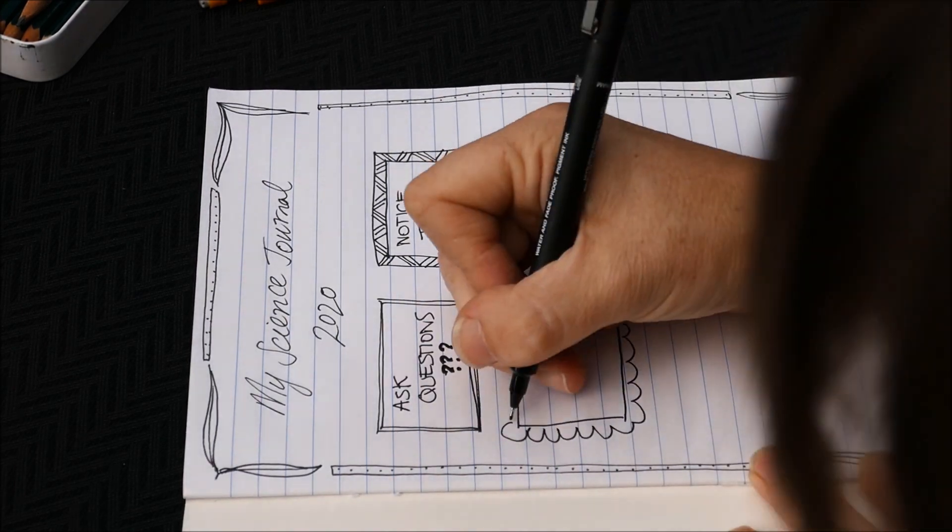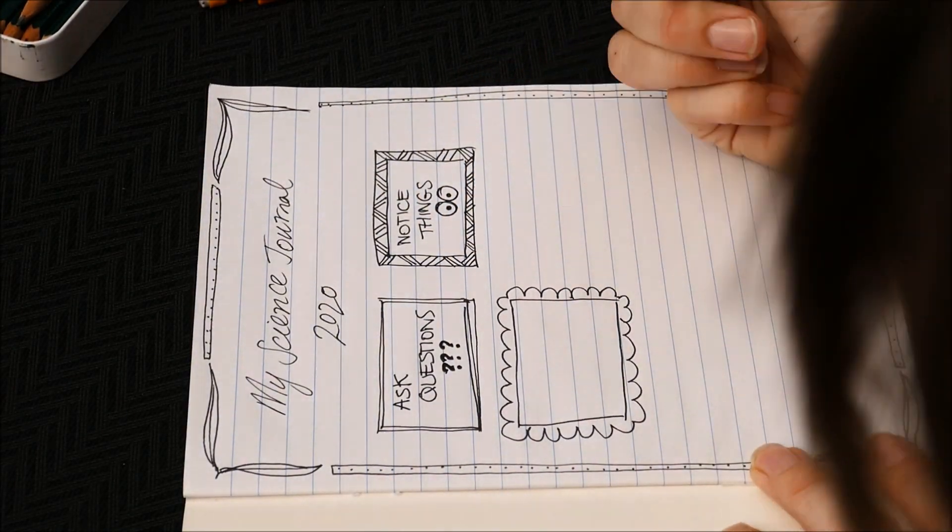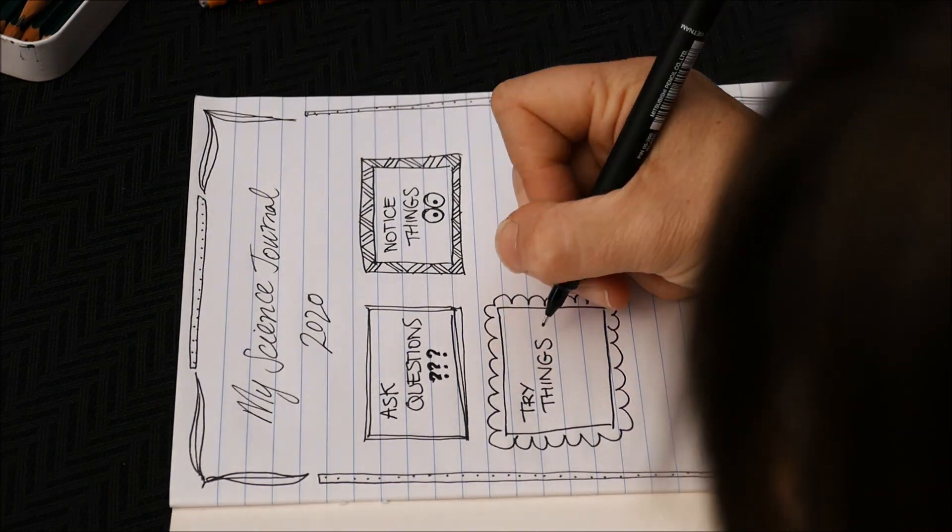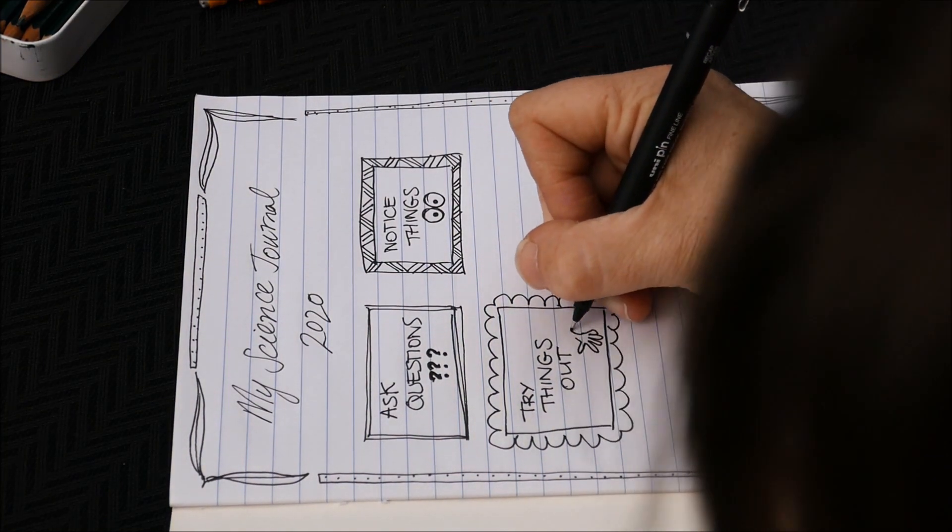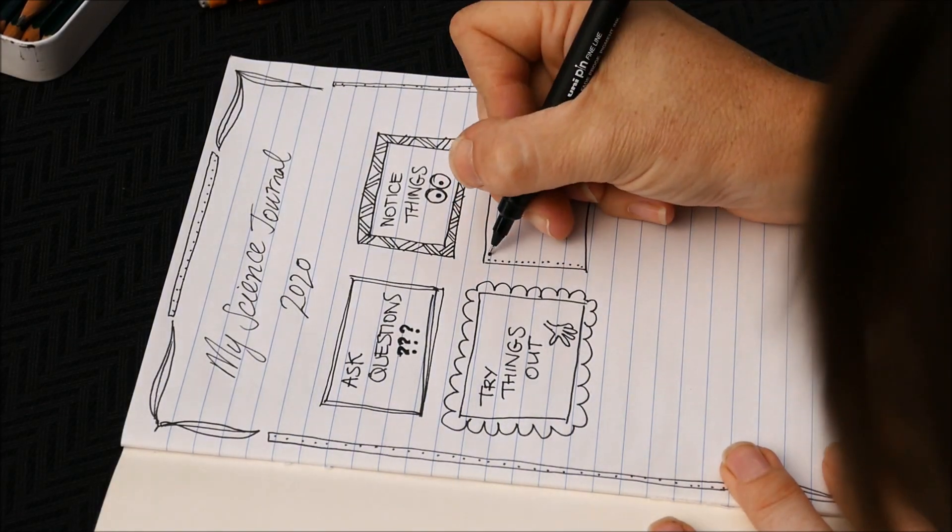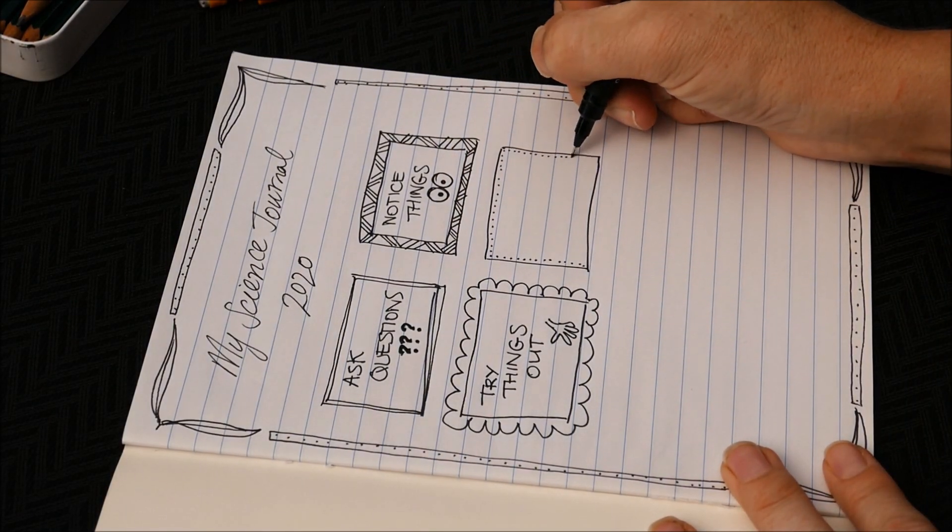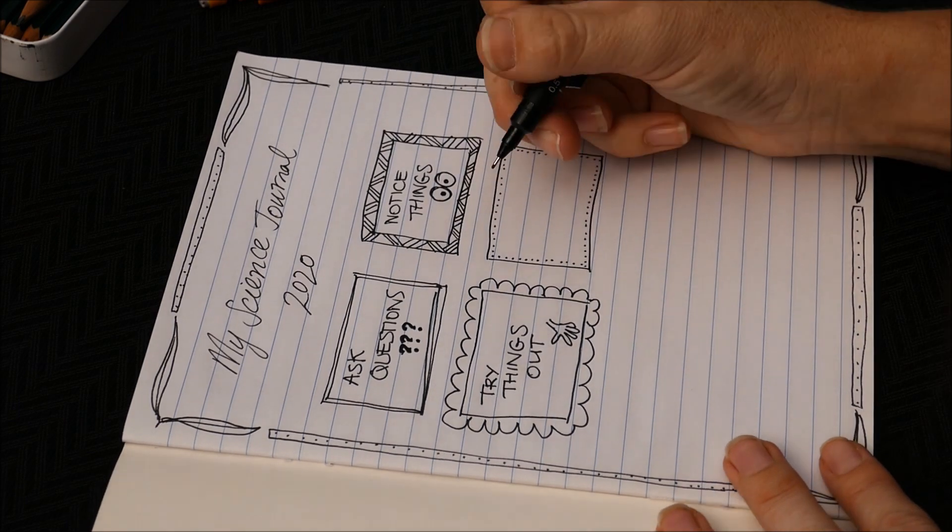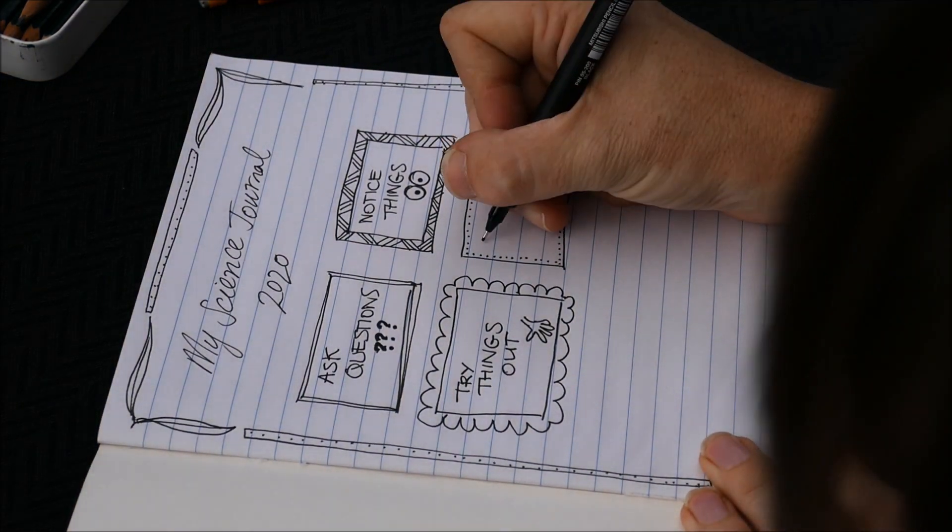So you might be outside and you might think why is that fly kind of flying and then it looks like it hits a corner and flies in the other direction. You can ask those things, draw pictures, write them down. Then try things out, try testing things, do little experiments, make sure you record everything you do in this book as well.